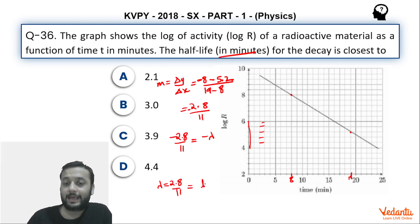Now, lambda is nothing but ln2 by t half. Correct? So t half can be found out using this formula. Now ln2 is 0.693 multiplied by 11 divided by 2.8. When you solve this, you will get this. Like if you put this value in your calculators, you are going to get somewhere around 2.73. So the best option is option B. So that was the correct answer to this question.